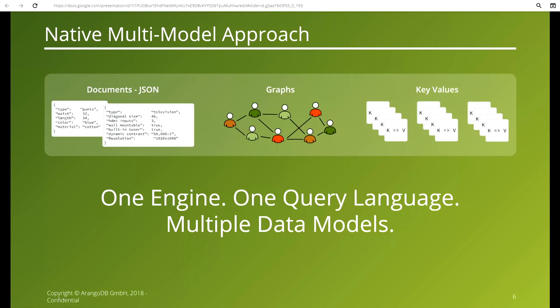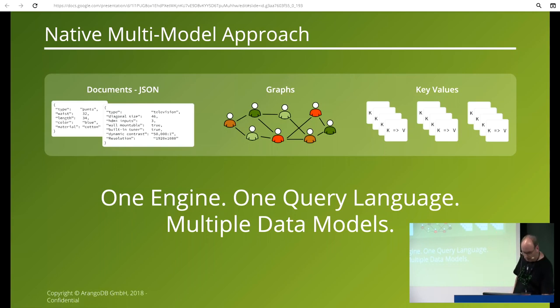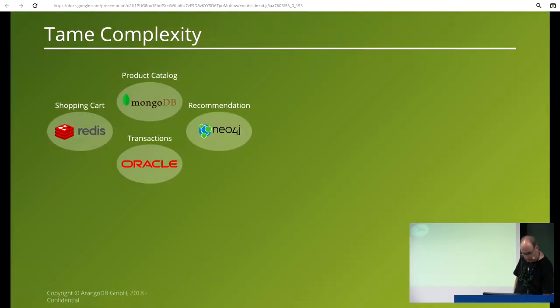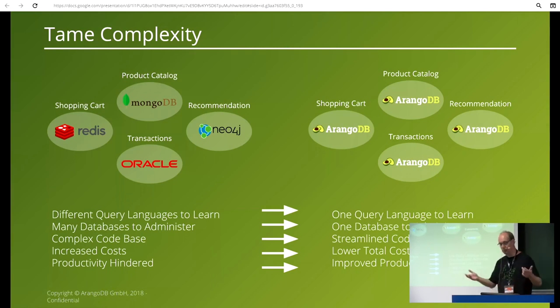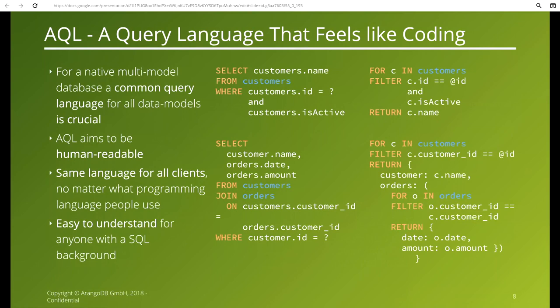By combining all of that in a single engine, obviously you still have to learn how to use a graph compared to a document, because even though they are in the same query language, a graph is by nature a little bit different. But at least you can talk to it in the same way, maintain it in the same way. In the end, you're reducing complexity by putting everything in one thing. This is our query language — you can select and do all the stuff. It's not exactly SQL, but it's very close, and you can do some things that are a lot more powerful than SQL. That query language covers all the models that we have.